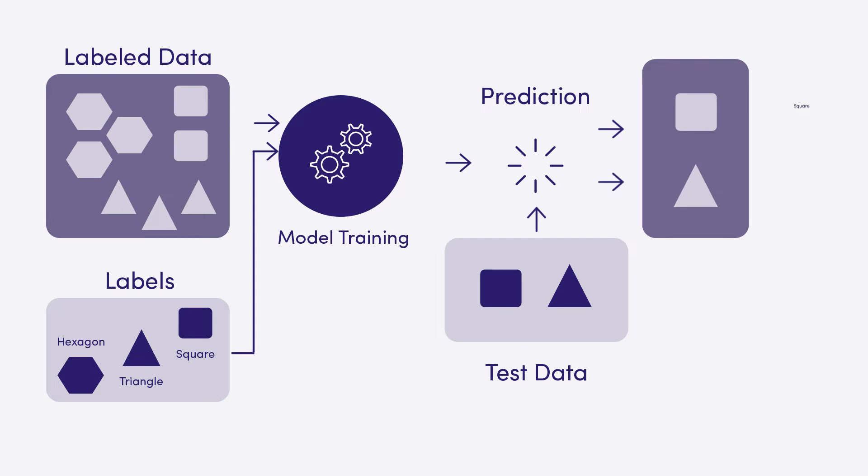The third step is to test the model on unseen data and measure how accurately it predicts the class. The term supervised learning stems from the fact that in the beginning we gave the algorithm a data set in which the correct answers were given. This is the key difference to unsupervised learning.